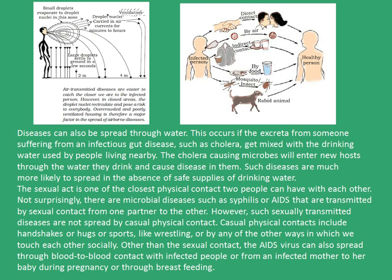Disease can also be spread through water. This occurs if excreta from someone suffering from an infectious disease, such as cholera, gets mixed with the drinking water used by people living nearby. The cholera-causing microbes will enter new hosts through the water they drink and cause disease in them as well. Such diseases are much more likely to spread in the absence of a safe supply of drinking water.